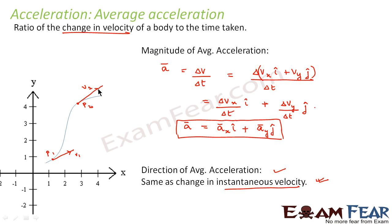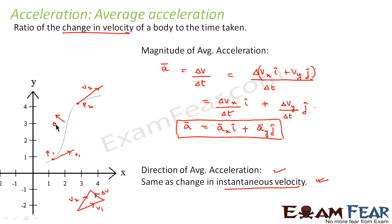Now what would be the direction of acceleration? Using our knowledge of vectors from earlier slides, we apply the head-to-tail method. Here is v1 and here is v2, drawn as parallel lines. The resultant vector delta v is in this direction — that is the change in velocity. So the direction of change in velocity, found using triangle law, gives us the direction of average acceleration.